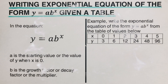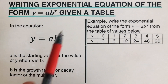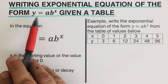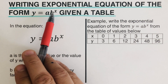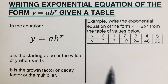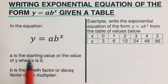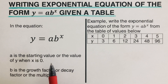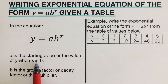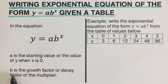Hello, everyone. In this video, we will be writing exponential equations of the form y equals ab to the power x given a table. In this equation, our a is the starting value, otherwise called the initial value, or the value of y when x is 0. And our b here is the growth factor or decay factor, or pretty much the multiplier.